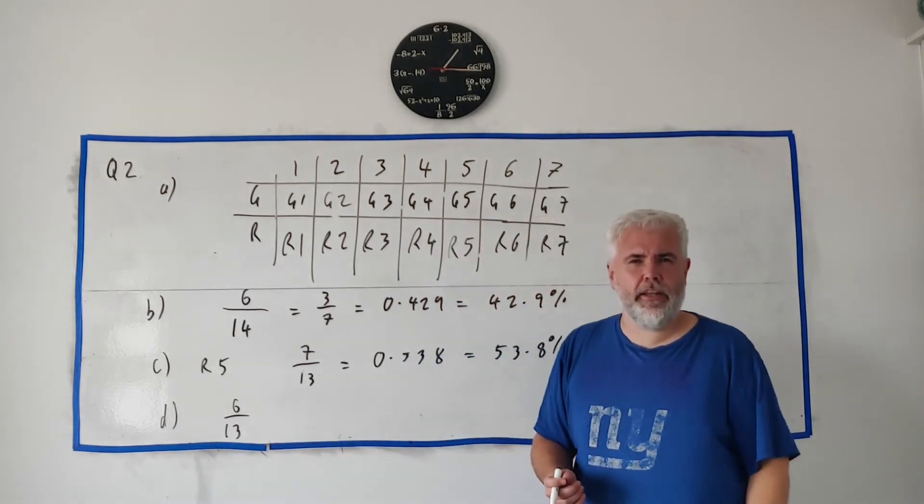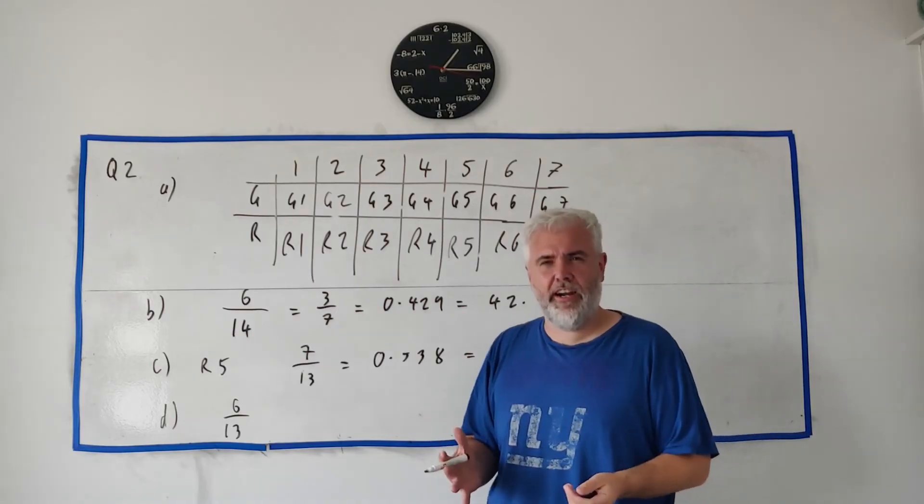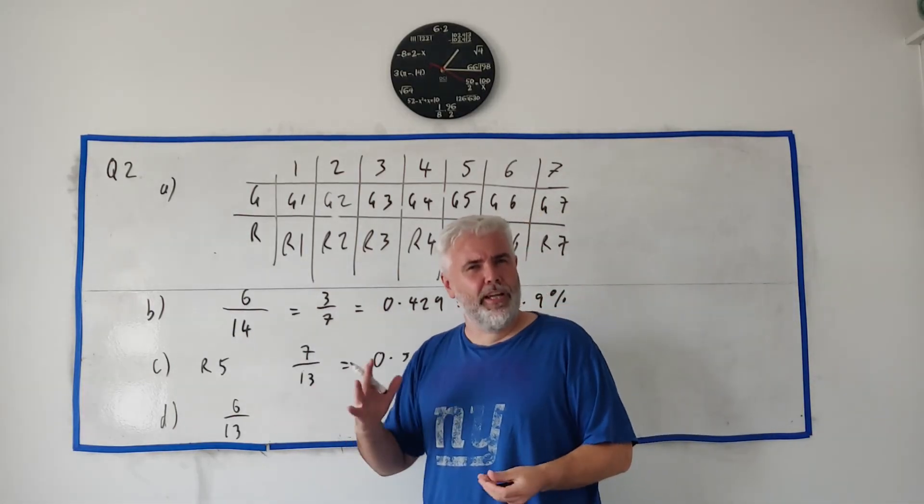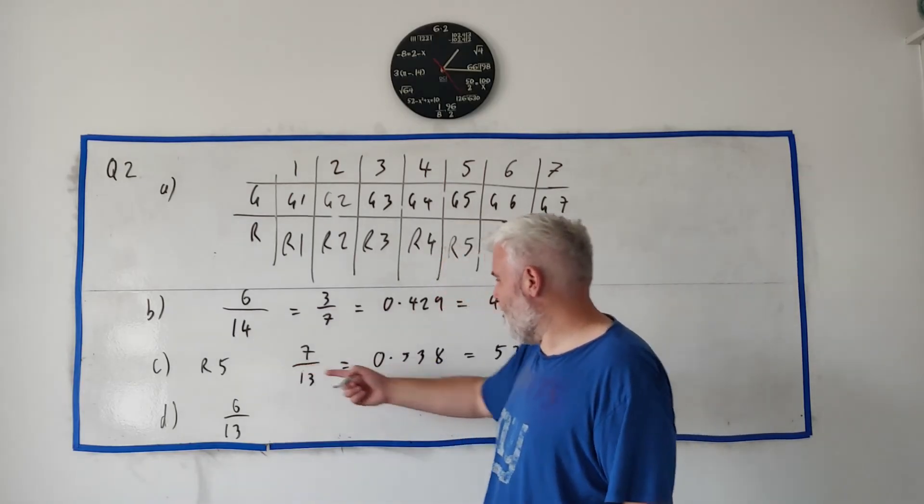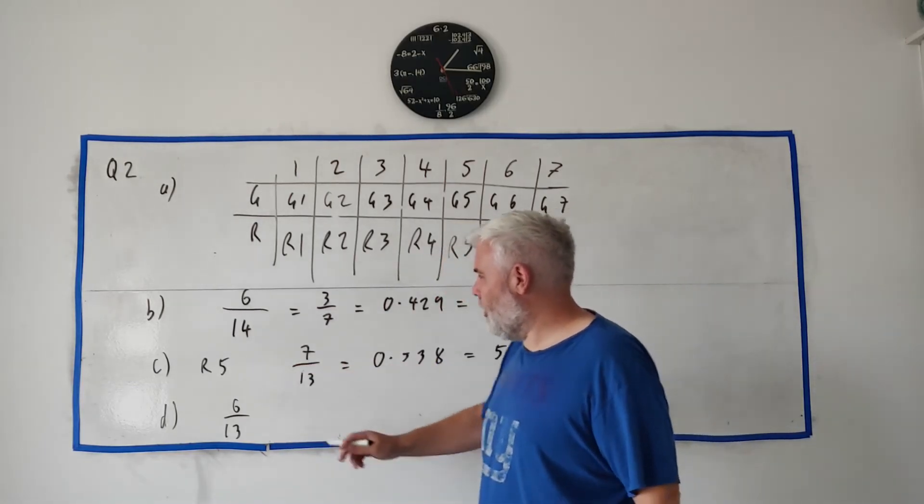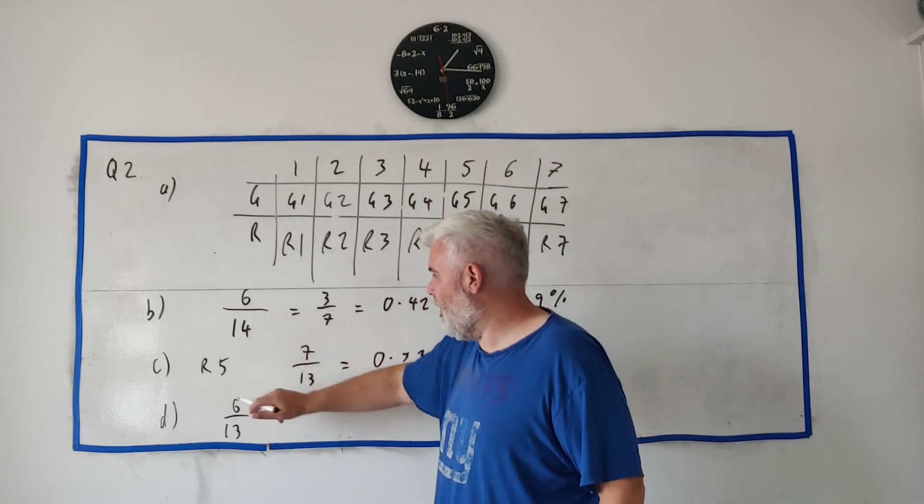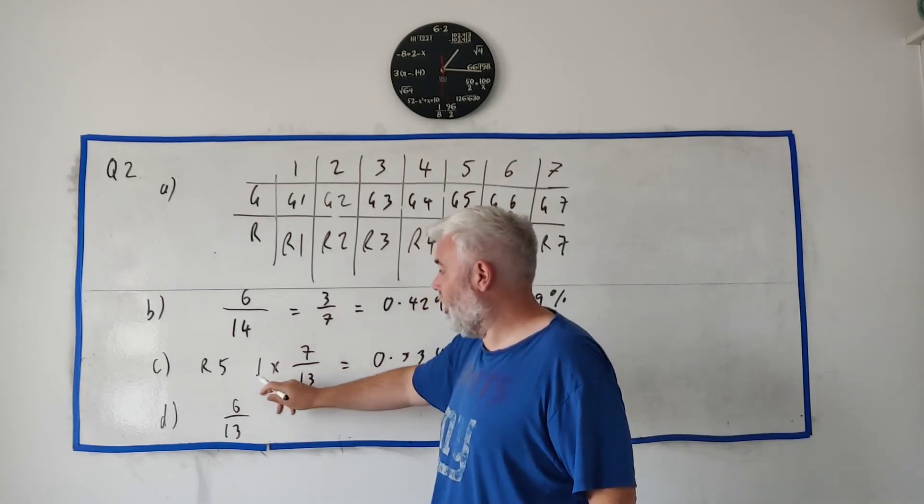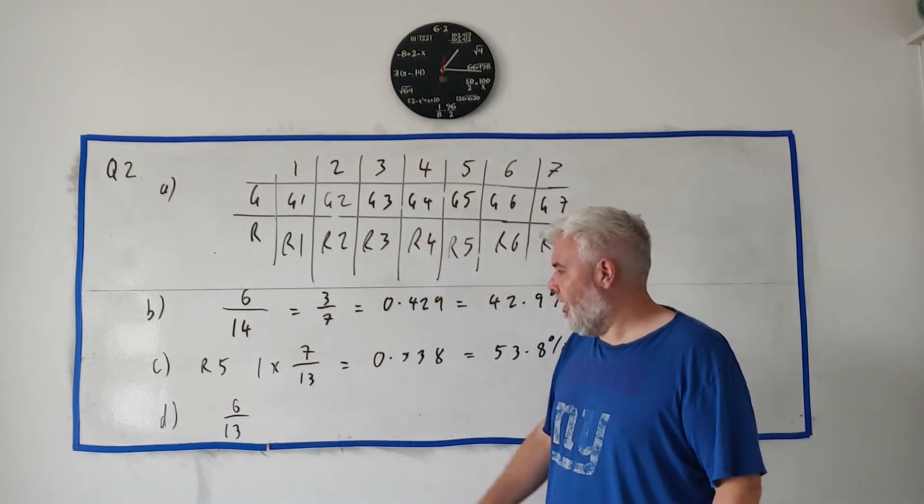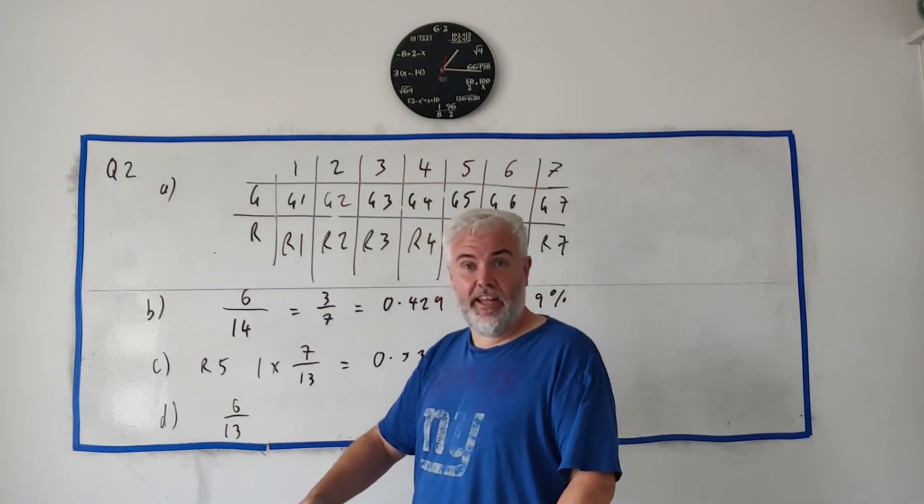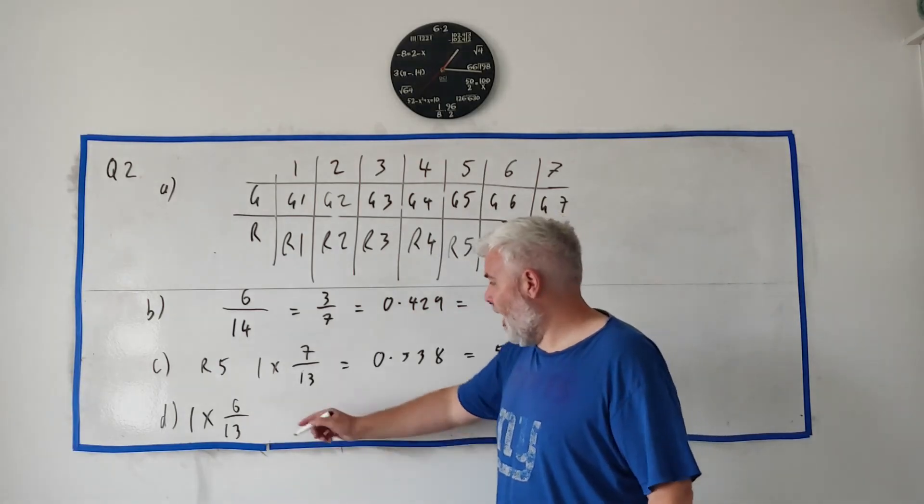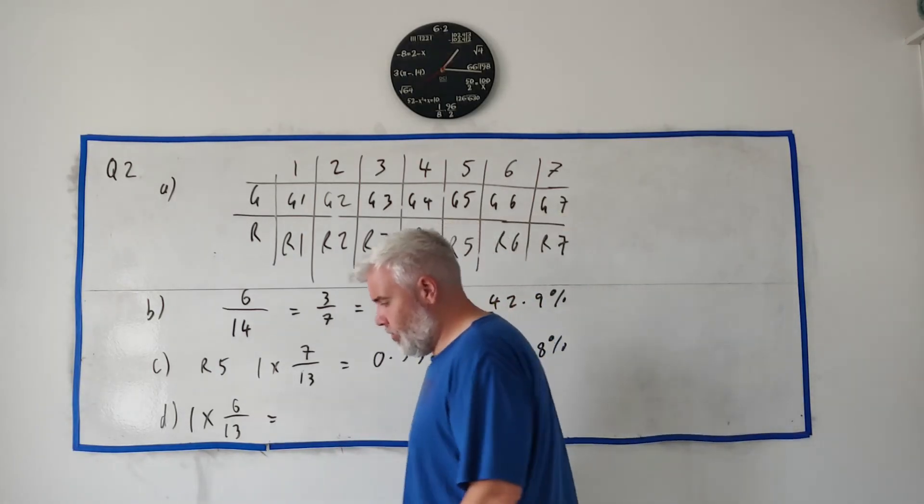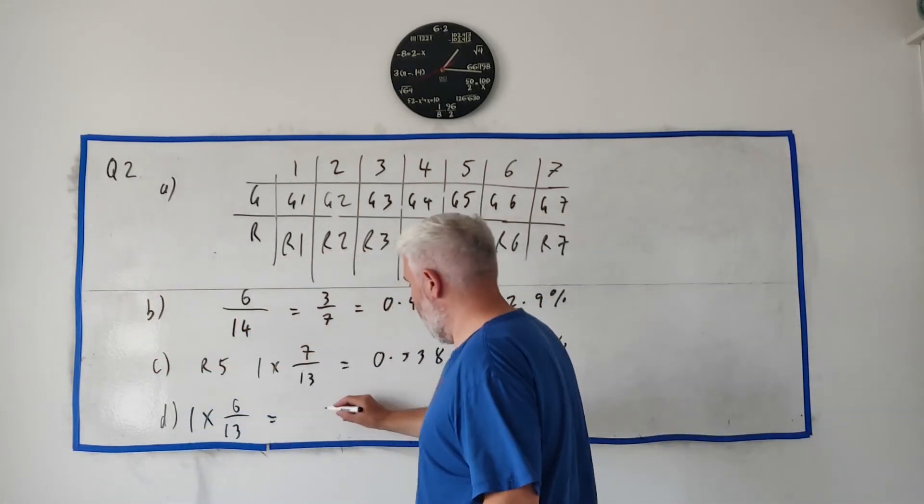For those students who are thinking, 'Hang on, if you pick two cards, should we not be multiplying two numbers?'—we sort of are. The odds of picking R5 in Part C was one; it was 100%, it was guaranteed. In Part D, the odds of picking any card is one—it's just guaranteed anyway. The answer here is 6/13, which also could be written as 0.462 or 46.2%. That's the end of question two.